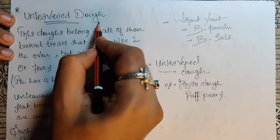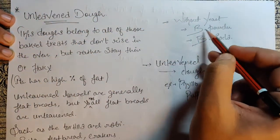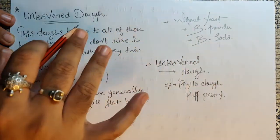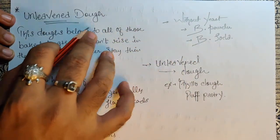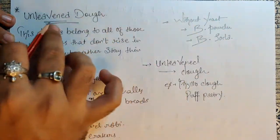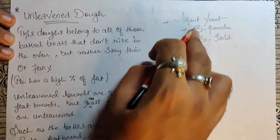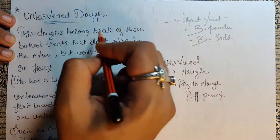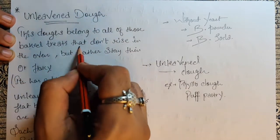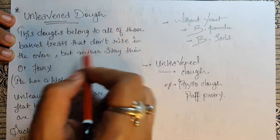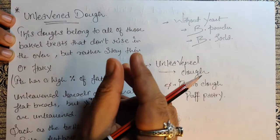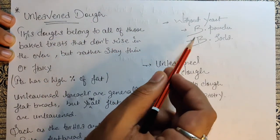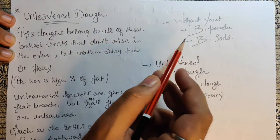Unleavened dough means without yeast, without baking powder, without baking soda — as simple as that. Leavened means when we use these agents, and unleavened means we don't use them. This dough belongs to all those baked treats that don't rise in the oven — we don't require any volume, so we are not using any of these rising agents.